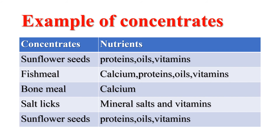Examples of concentrates and the nutrients they provide: sunflower seeds contain proteins, vitamins, and oils; salt lick contains vitamins and mineral salts; bone meal contains calcium; and fish meal contains vitamins, oils, proteins, and calcium. These are very important to animals. Understanding animal feeds is essential when rearing animals, whether they need protein, vitamins, mineral salts, or carbohydrates.